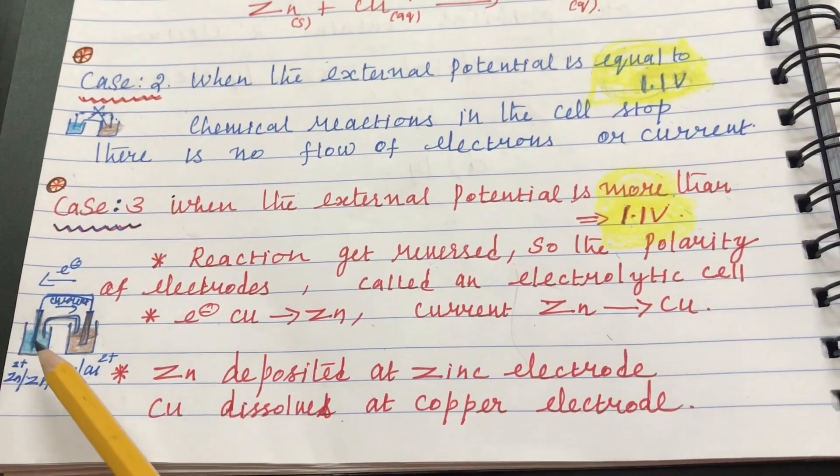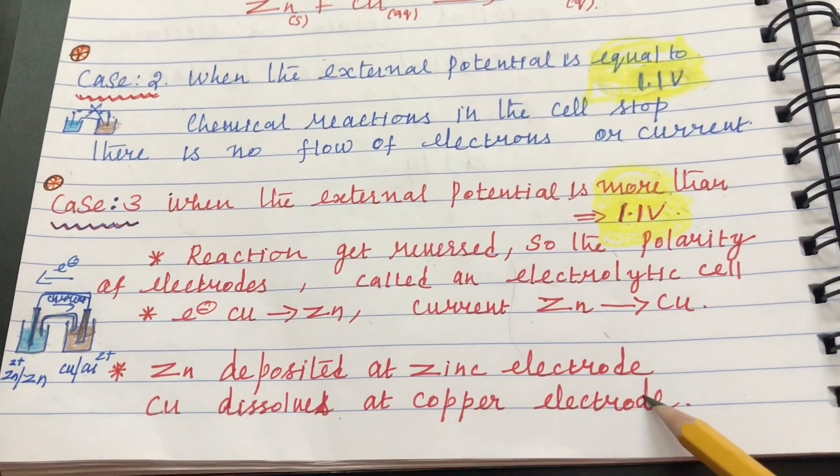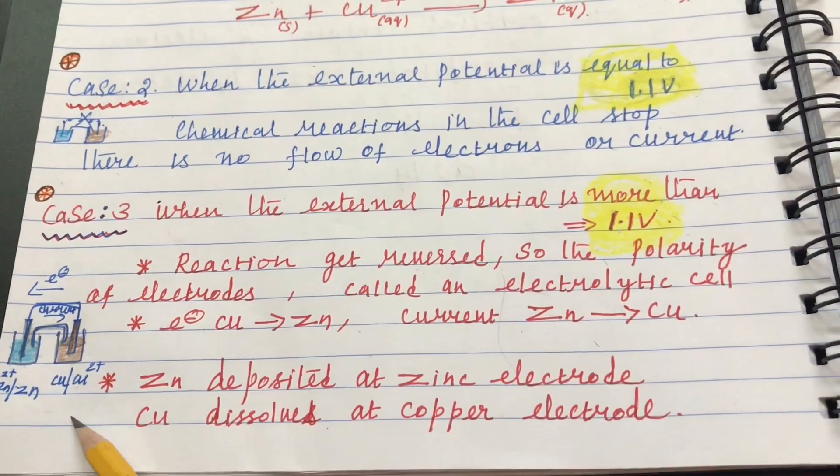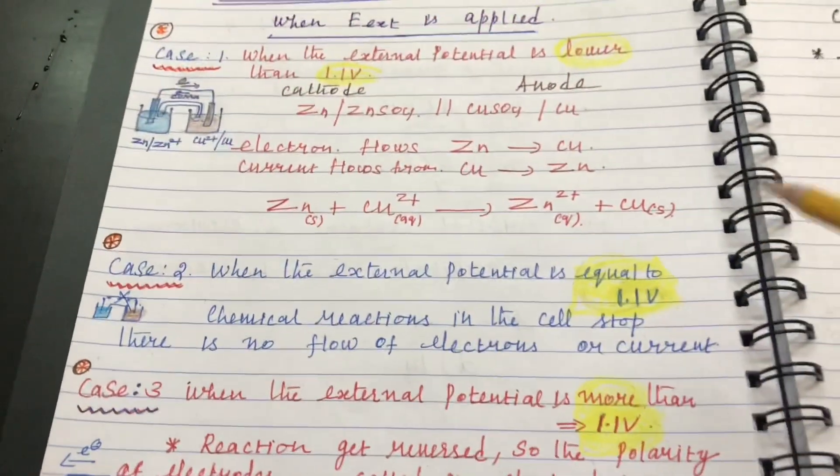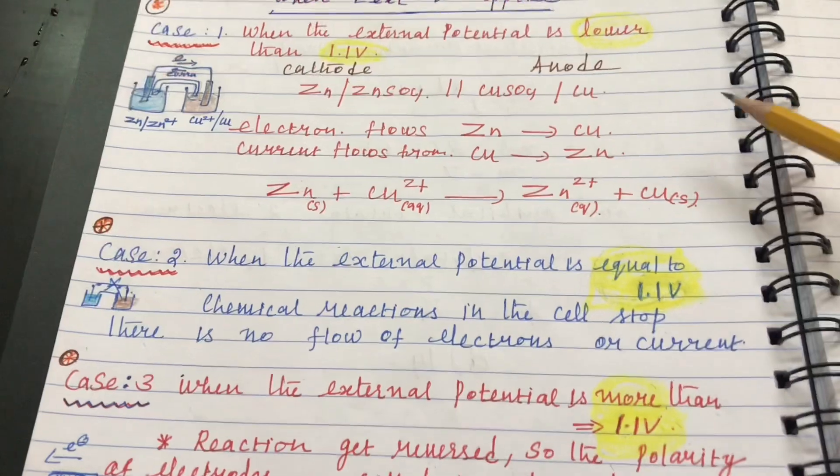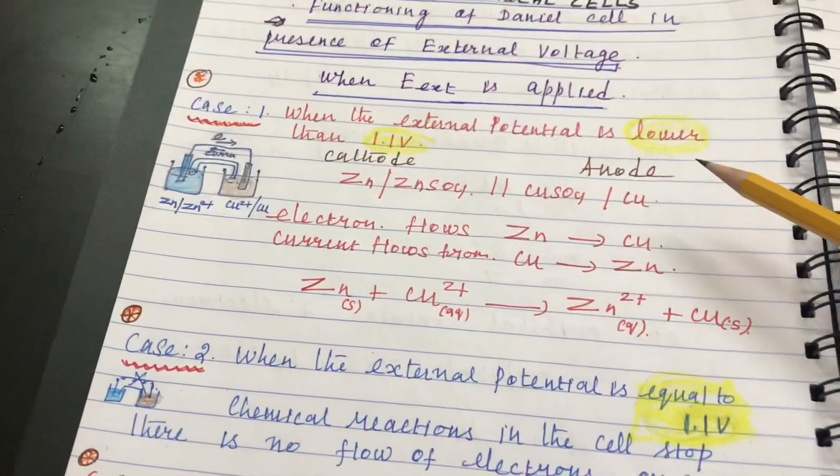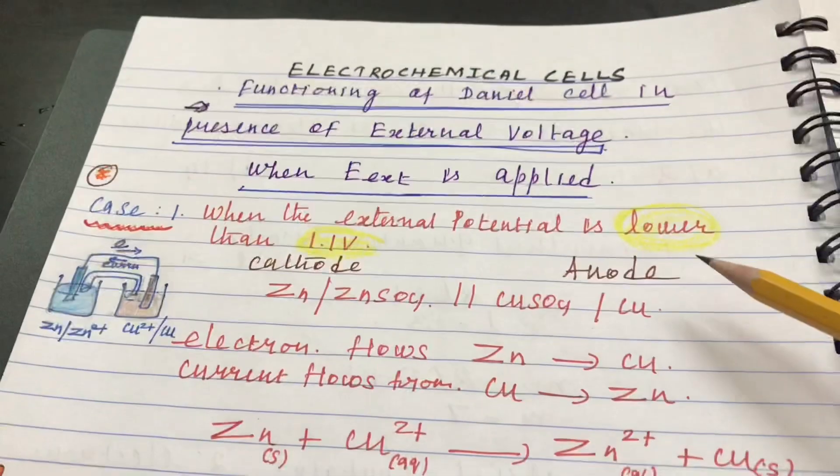Zinc is deposited at zinc electrode and copper dissolves at copper electrode. So, these are the possible changes that take place when external potential is applied in Daniel cell.